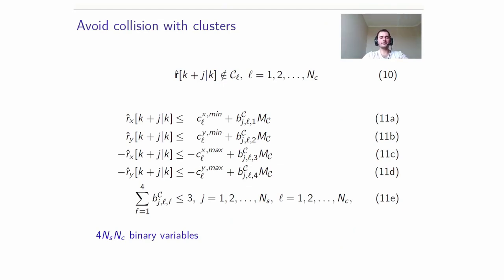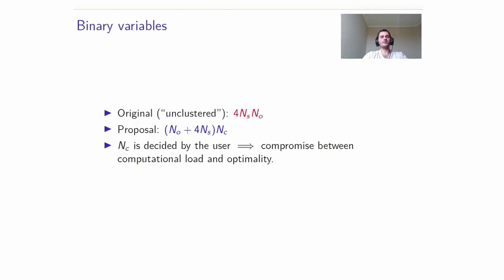To avoid collisions with the clusters, it is a simple matter of reproducing the same constraints used for avoiding collisions with the obstacles. So we have to be either to the left, to the right, below, or above it. So it is just a copy of those constraints, but please notice that the number of binary variables is 4 times NS times NC as we have NC clusters instead of NO obstacles.